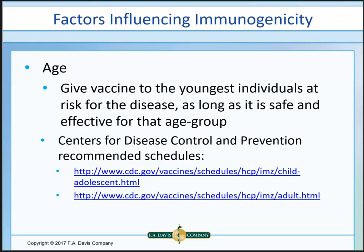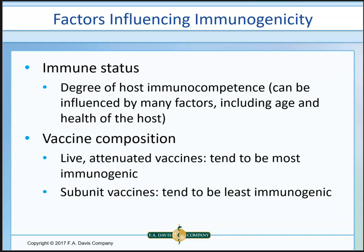When you go to a pediatrician, they follow a vaccination schedule you hear about on TV all the time. Another factor affecting immunogenicity is the immune status of the person — are they immunocompetent? Can they elicit an immune response? Age matters: too young or too old doesn't work as well. Other considerations include whether the person is on chemotherapy, immunosuppressants, has had a transplant, or is currently ill. The degree of host immunocompetence is huge.